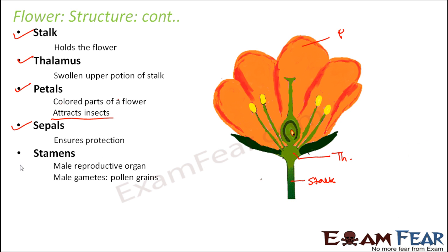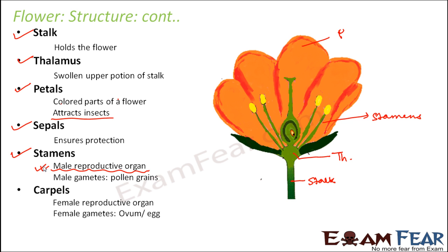Stamens are the male reproductive organ of the flower. In a flower we have both male and female reproductive organs. The male gametes are the pollen grains, which are present in the stamens — that is the male reproductive organ. Similarly, the female reproductive organs are the carpels, and they contain the female sex cells or female gametes called ovum.